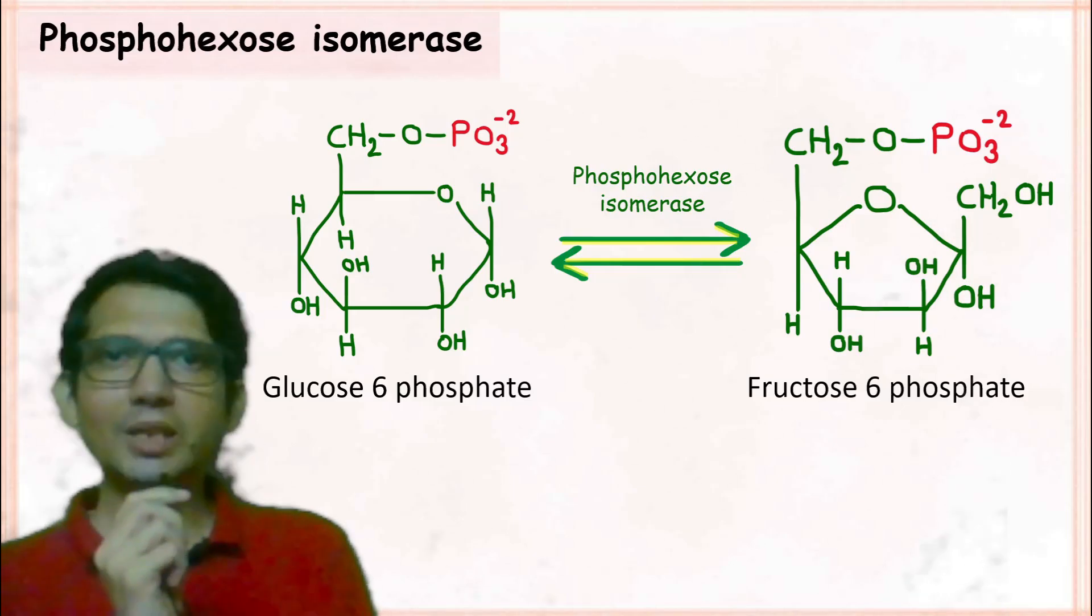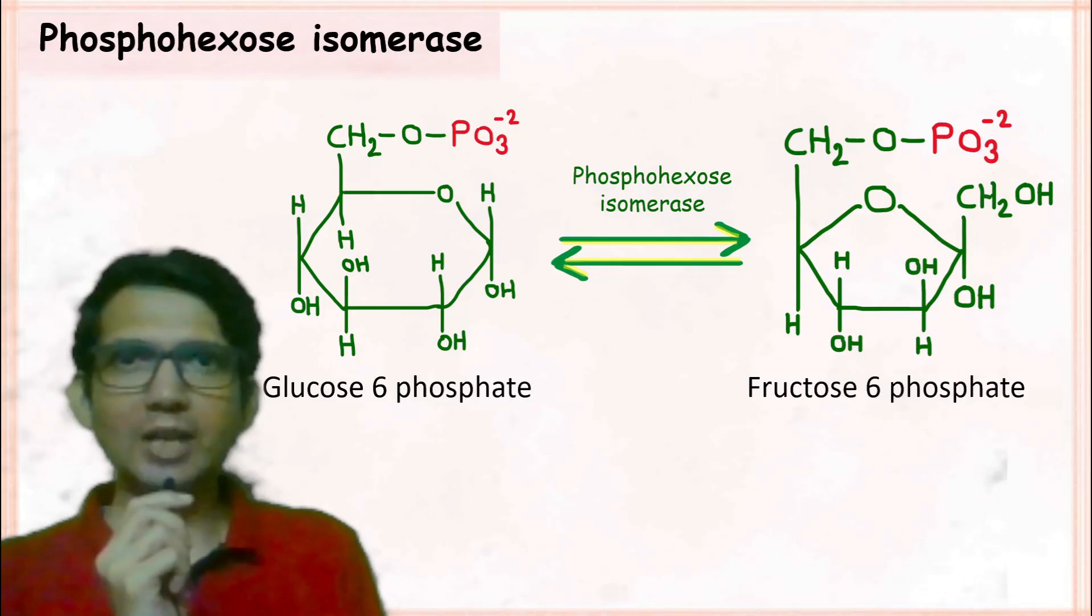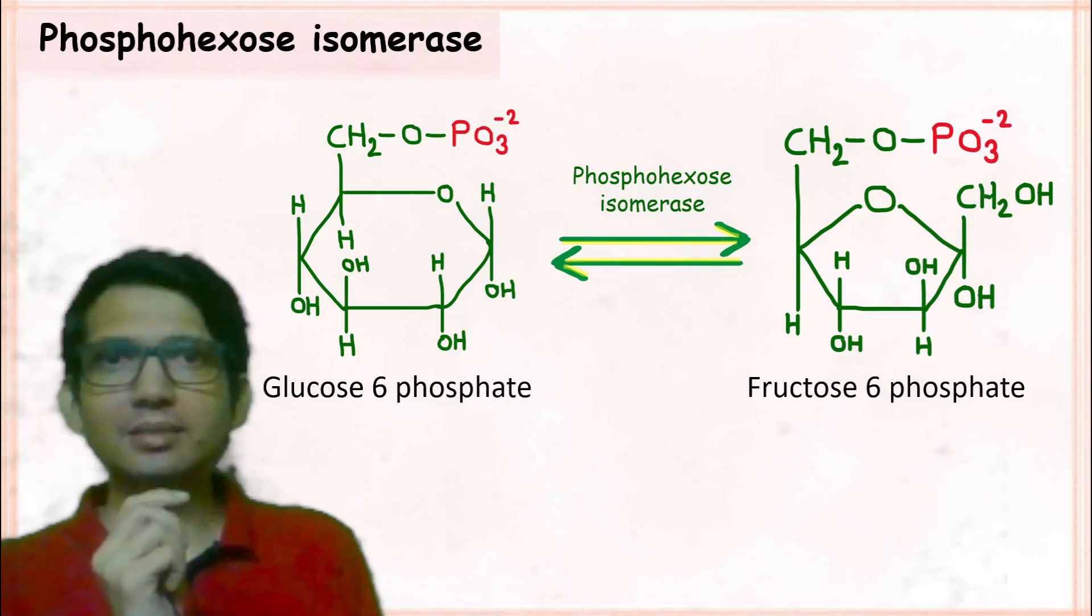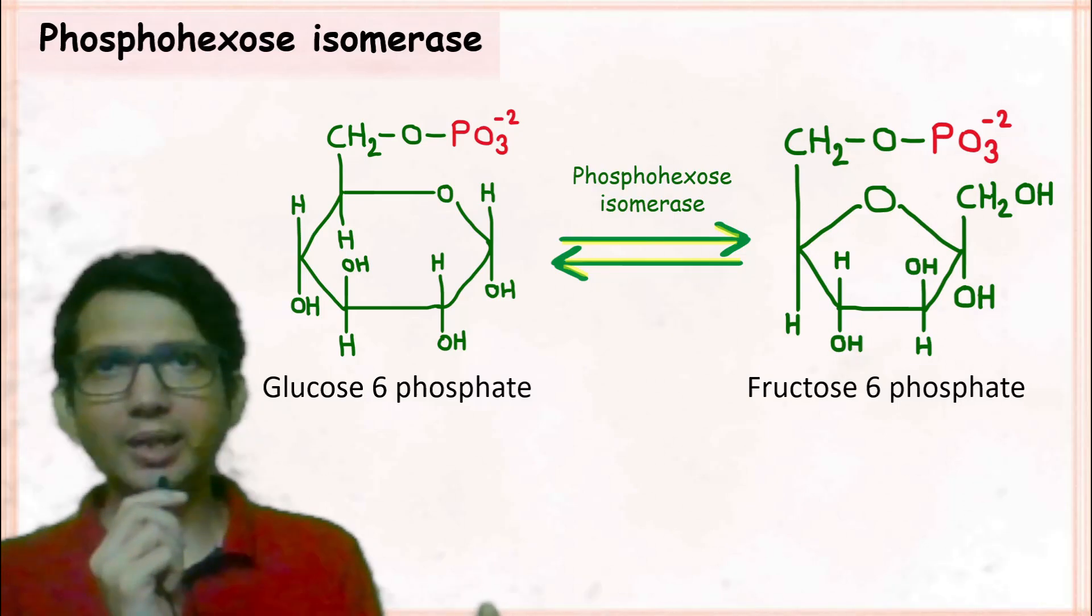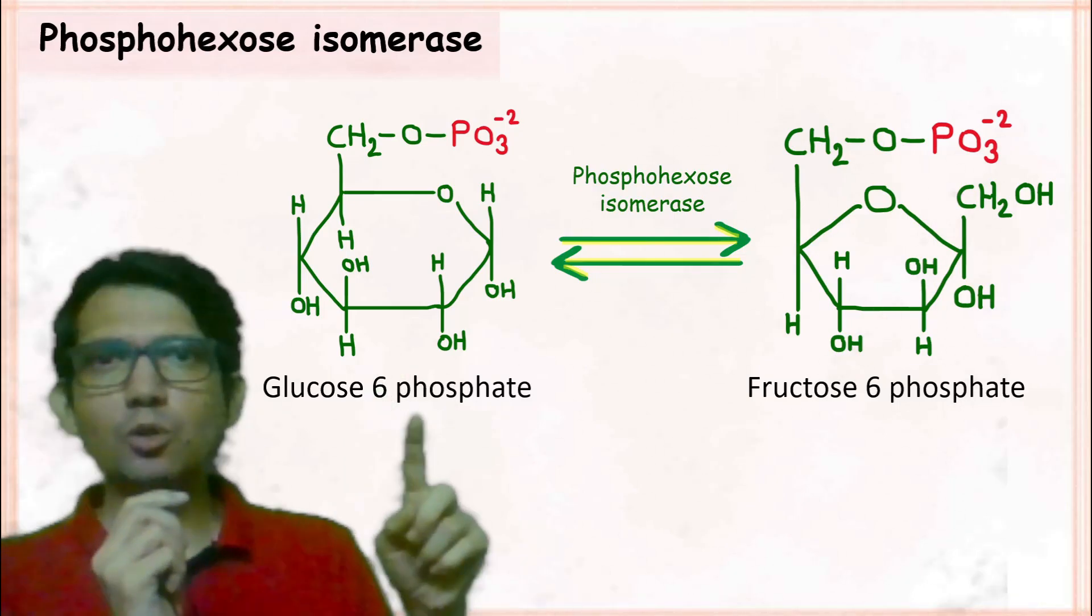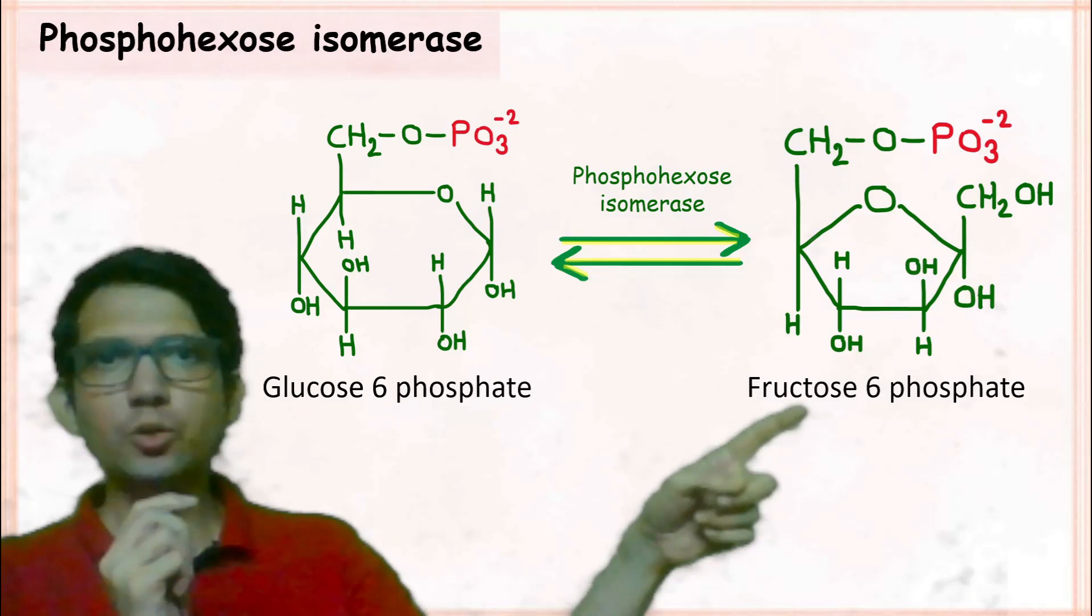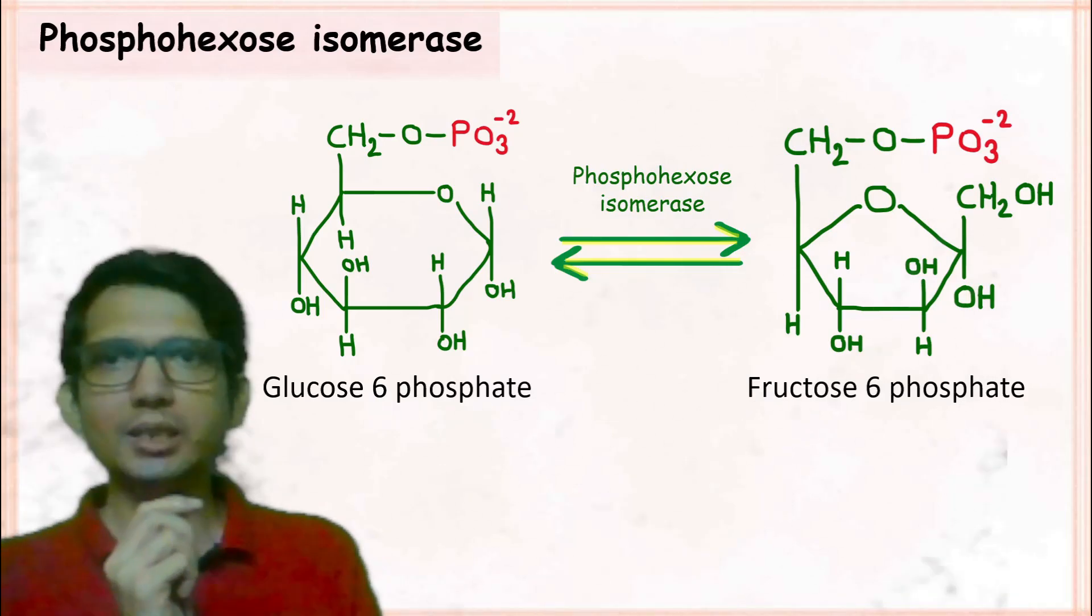Hi, let's talk about the enzyme phospho-hexo-isomerase. The enzyme phospho-hexo-isomerase converts glucose 6-phosphate into fructose 6-phosphate.